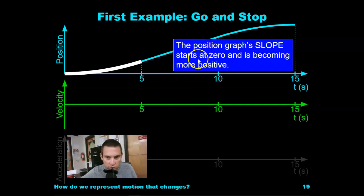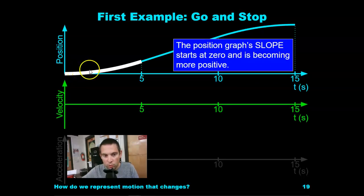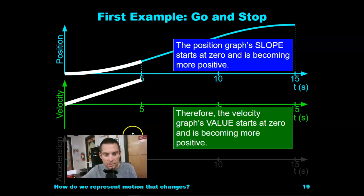Here's how I know that just by looking at the graph: the graph's slope starts at zero and is becoming more positive. If you were to hold up a ruler to this line, you'll be able to see that. Therefore the velocity graph's value starts at zero and is becoming more positive.